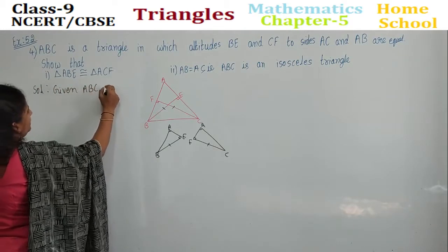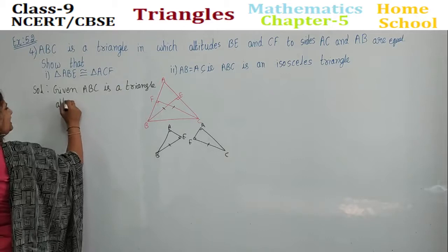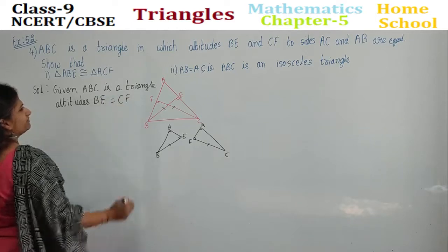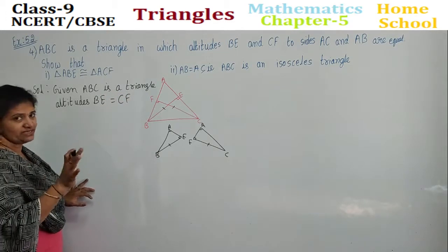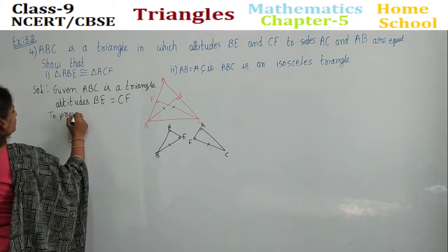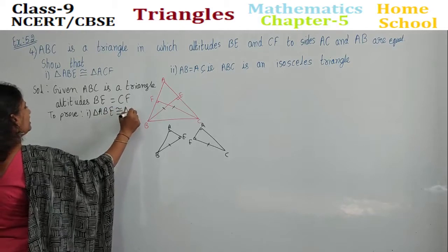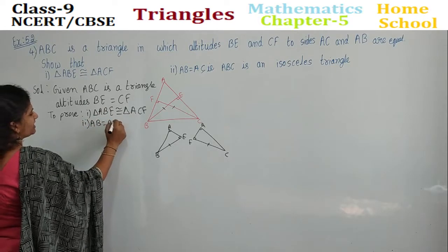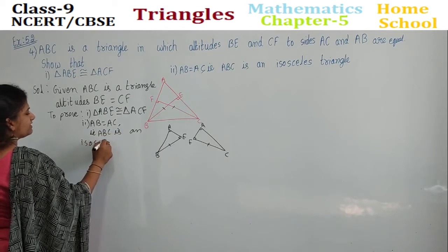Given: ABC is a triangle in which altitudes BE and CF — lying on AC and AB — are equal. Sides are not equal; the altitudes are equal. To prove: first, triangle ABE is congruent to triangle ACF. And second, AB is equal to AC — that is, ABC is an isosceles triangle. Let's start the proof.